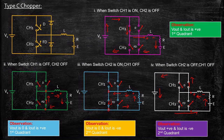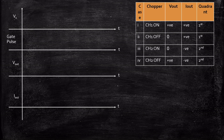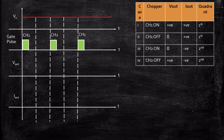We have now analyzed all four cases and will correlate them to draw the waveforms. When CH1 is conducting and CH2 is off, output voltage is positive. When I say CH2 is conducting, CH1 is by default off. We should never turn on CH1 and CH2 together as they are in the same leg — doing so causes a shoot-through fault, creating a short circuit in the overall system.